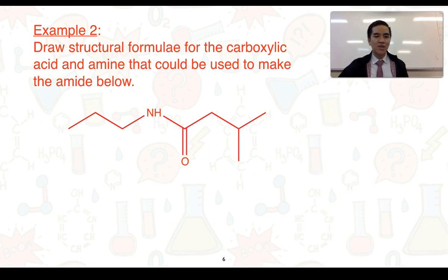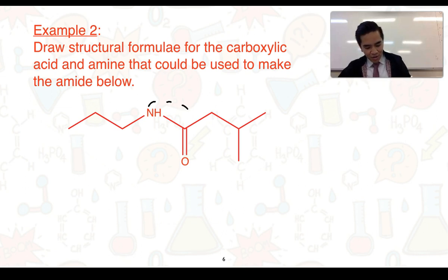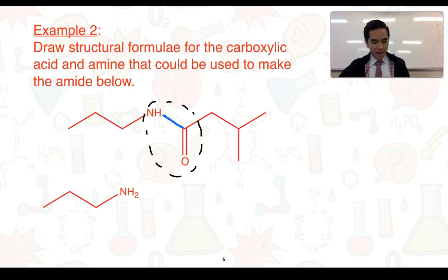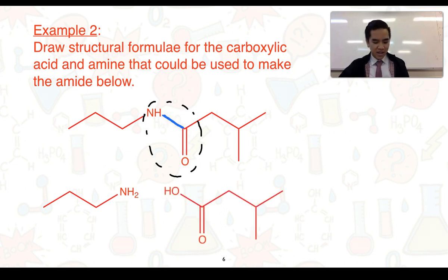For example two, we need to draw the structural formulae for the carboxylic acid and amine that could be used to make the amide shown. We first identify the amide functional group and note that it's the carbon-to-nitrogen bond that forms — so this is the bond we break. To the left, this section will form the amine with an additional hydrogen added. To the right, the section with the C-to-O double bond forms the carboxylic acid, with only a C-to-OH missing.